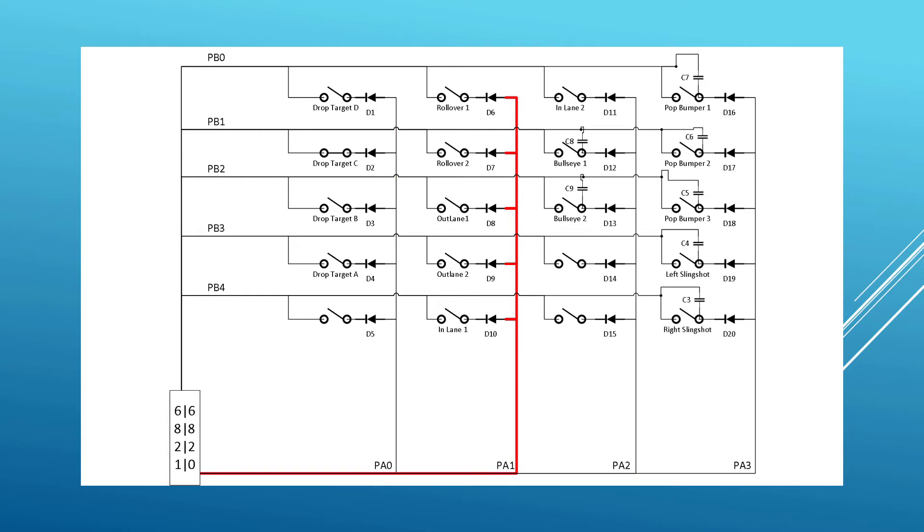The next pulse goes out, but nothing is received back. Even though drop target C is still down, the pulse is not on that column. On the next pulse, the ball hits bullseye 1 on the playfield. The PIA sees the pulse back on PB1 and can tell that in this case, the bullseye is the switch. Again, it notifies the CPU to handle the scoring and event processing.